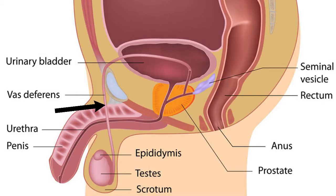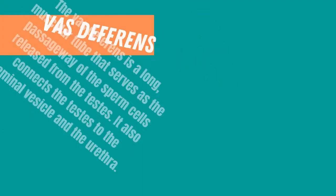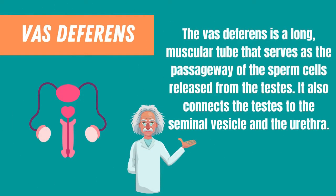The vas deferens is a long, muscular tube that serves as the passageway of the sperm cells released from the testes. It also connects the testes to the seminal vesicle and the urethra.